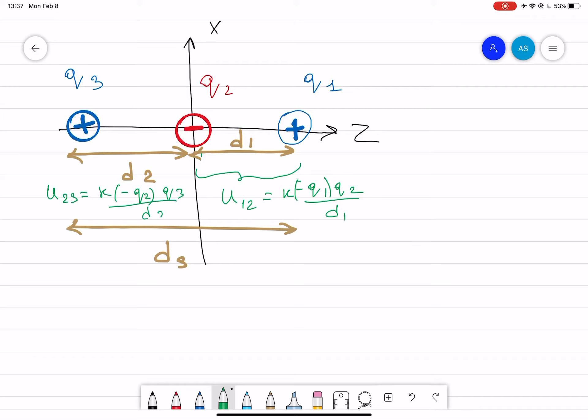What is the potential energy between one and three? Which is k q1 q3 divided by d3.